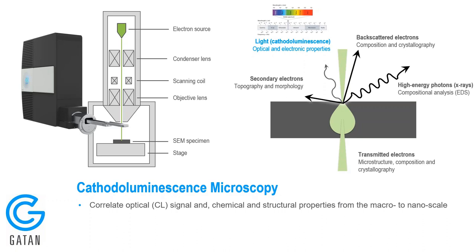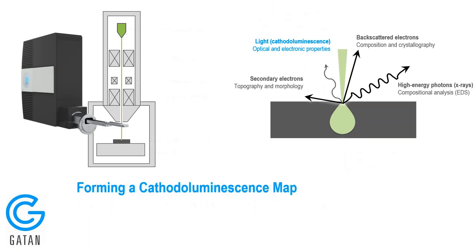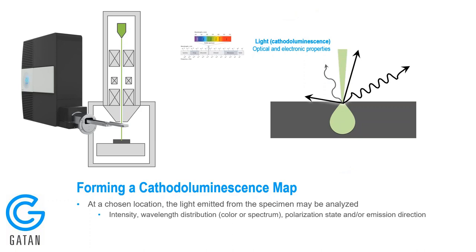To detect the light emitted, we need to add an optical detector to the side of the electron microscope. This can be very simple — just a light-sensitive element close to the specimen — or more complicated like the Monarch system shown here, which contains an optical spectrometer allowing you to analyze many more properties of the emitted light. Within the electron microscope, we have access to photons in visible, ultraviolet, and infrared ranges, plus many other signals available simultaneously from the same sample location, giving access to information like composition and crystallography.